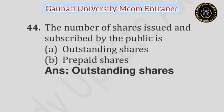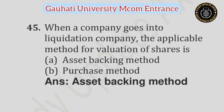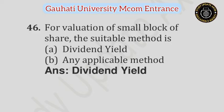Question number 44: The number of shares issued and subscribed by the public is — Option A: Outstanding shares, Option B: Prepared shares. Answer is Outstanding shares. Question number 45: When a company goes into liquidation, the applicable method for valuation of share is — Option A: Asset backing method, Option B: Average method. Answer is Asset backing method. Question number 46: For valuation of small block of shares, the suitable method is — Option A: Dividend yield, Option B: Any applicable method. Answer is Dividend yield.